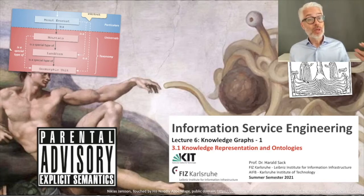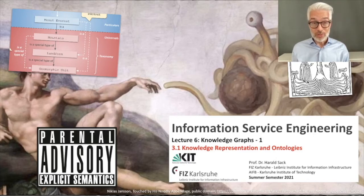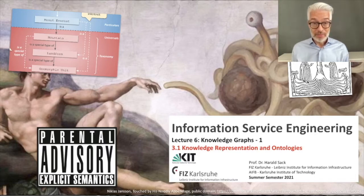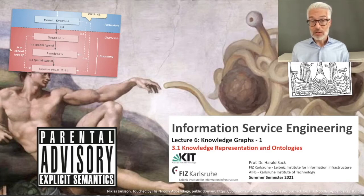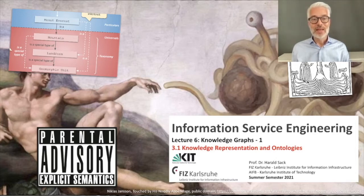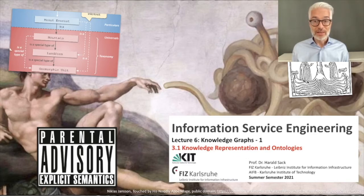However, if we want the machine — the computer — to understand these knowledge representations, they have to follow a formal framework, which in our sense is most times mathematical logic. To become understandable — and you remember we talked about understanding information also in the natural language processing part of this lecture — the machine must also be able to understand these knowledge representations, which means it has to interpret them correctly in an automated way. How to do that and how to explicitly model semantics and knowledge you will see in the very first chapter when we talk about knowledge representation and ontologies.